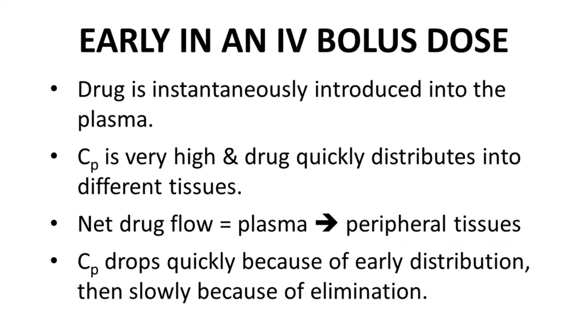This early distribution process is fairly fast. How fast? It's normally complete within about 15 minutes. So at injection, plasma concentration is sky high. CP drops rapidly because of distribution, then slowly because of natural drug elimination processes, such as hepatic metabolism and renal filtration.